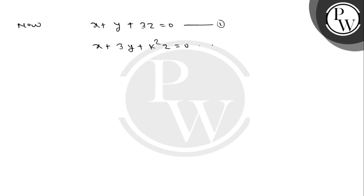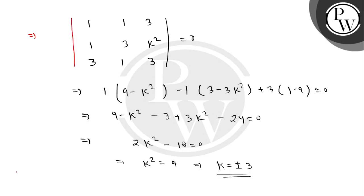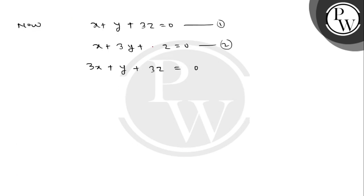x plus y plus 3z equal to 0. And k squared value we found out, so k squared we put as 9.